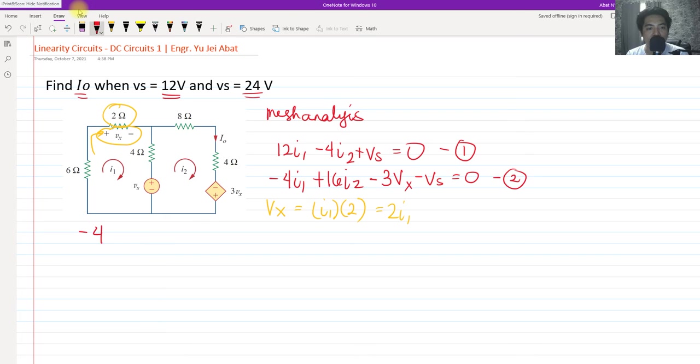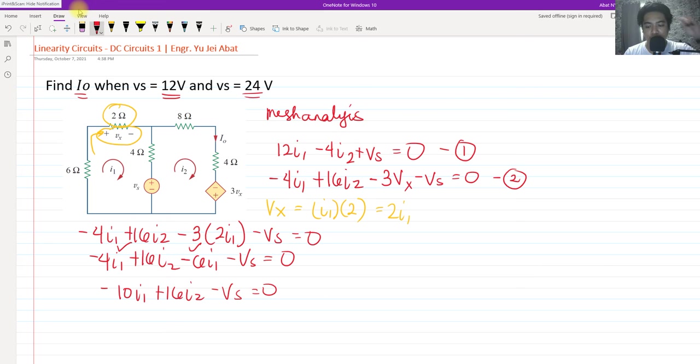So we have negative 4 I sub 1 plus 16 I sub 2 minus 3 times V X, where V X is 2 I sub 1, minus V S equals 0. Simplifying, we have negative 4 I sub 1 plus 16 I sub 2 minus 6 I sub 1 minus V S equals 0. I sub 1 and I sub 1 can be simplified. Negative 4 I sub 1 minus 6 I sub 1, that's negative 10 I sub 1 plus 16 I sub 2 minus V sub S equals 0. This would be our equation 3.